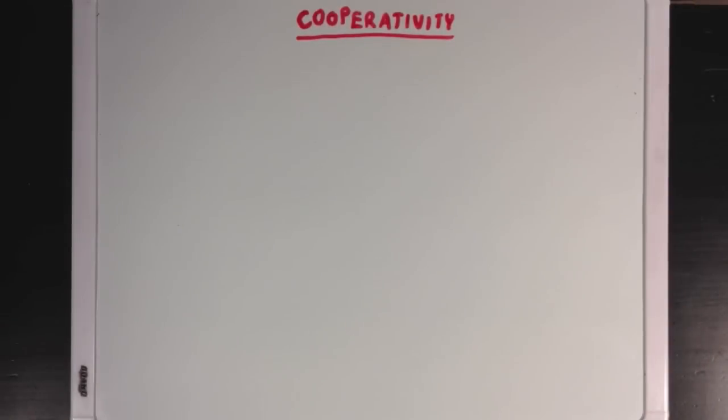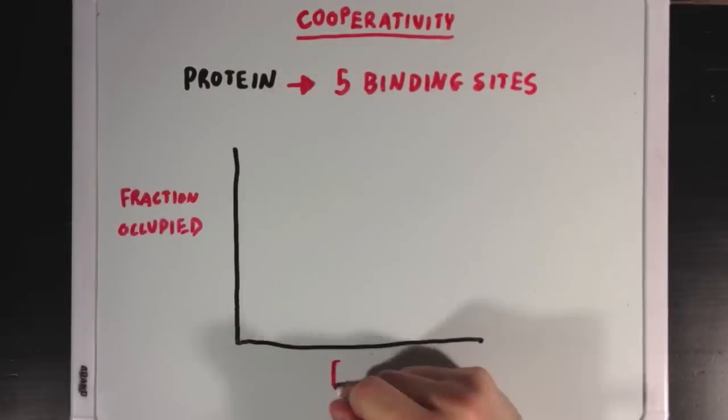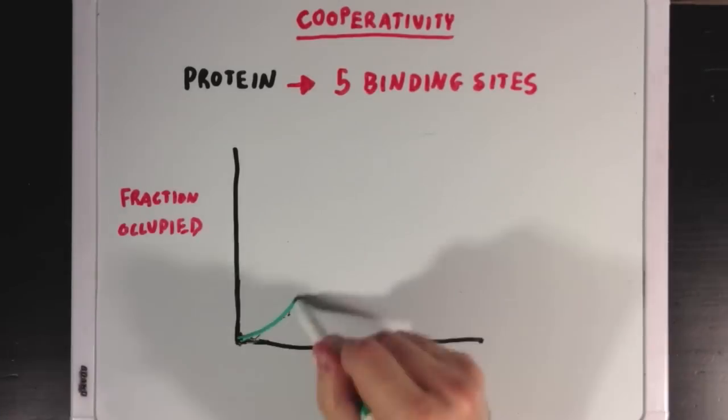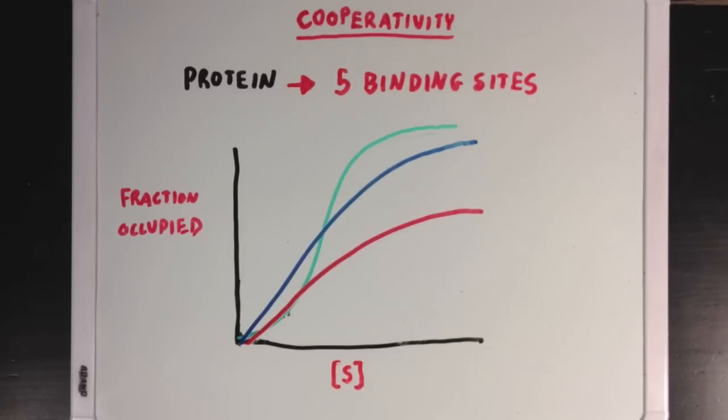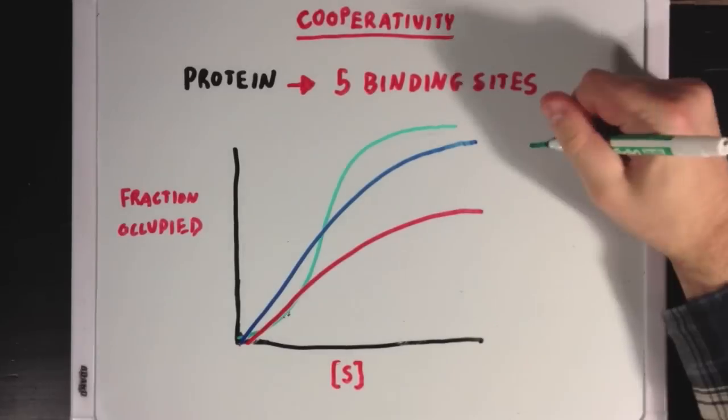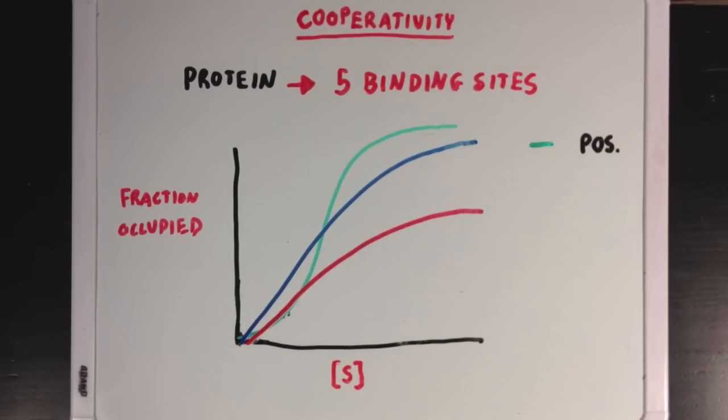Let's look at this graphically. If we have a protein with, let's say, five binding sites, and plot the fraction occupied versus the substrate concentration, we would come up with three possible curves. The green curve, which takes on a sigmoidal shape, would represent an enzyme with positive cooperativity. The blue curve, with a hyperbolic shape, would represent an enzyme with non-cooperative binding. And the red curve would represent an enzyme with negatively cooperative binding.